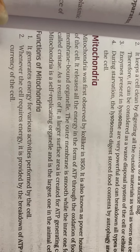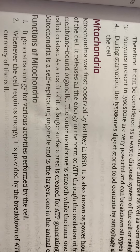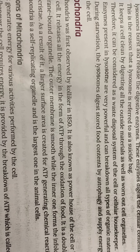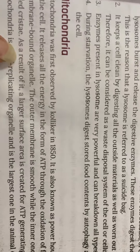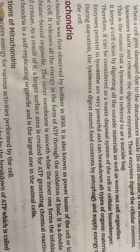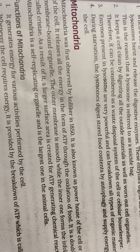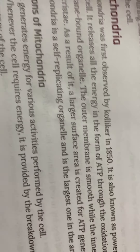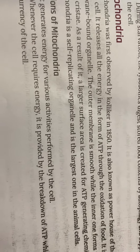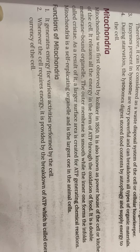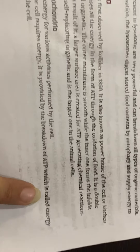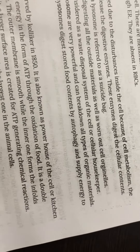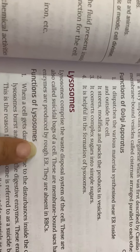The next cell organelle is the mitochondria, known as the powerhouse of the cell. The mitochondria releases energy to the cell in the form of ATP. ATP is called the energy currency of the cell. Mitochondria is known as the powerhouse of the cell, and lysosomes are known as the suicide bags of the cell.